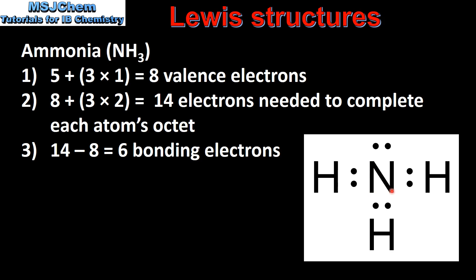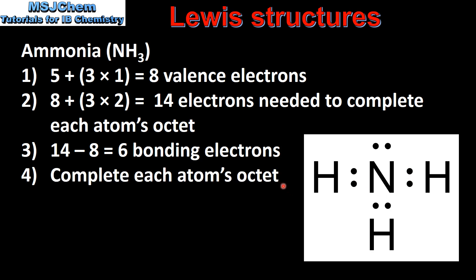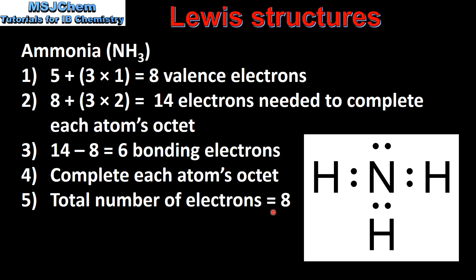We put the nitrogen atom in the centre and bond each hydrogen atom with 2 electrons. In step 4 we complete each atom's octet — to complete nitrogen's octet we use the remaining electrons as non-bonding electrons. Now the nitrogen atom has 8 valence electrons and each hydrogen has 2 valence electrons. Finally, we count the total number of valence electrons in the molecule, which is 8 — the same as calculated in step 1.